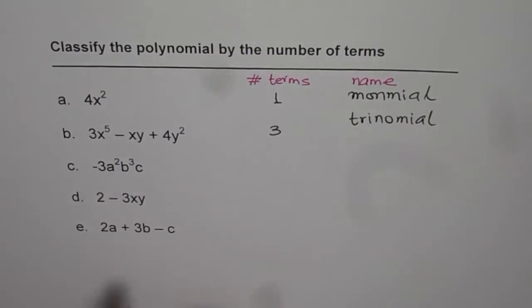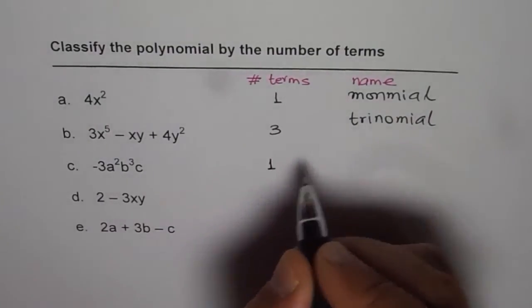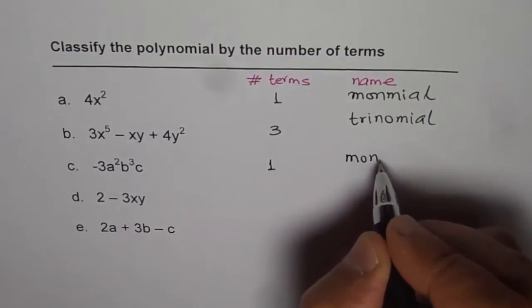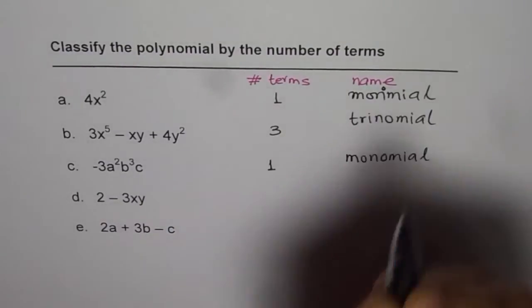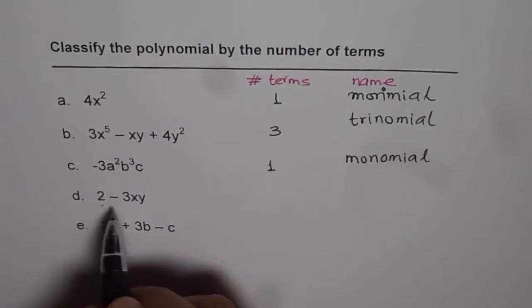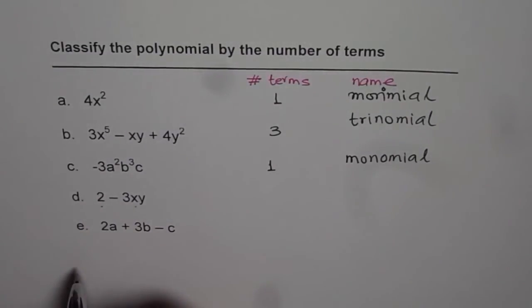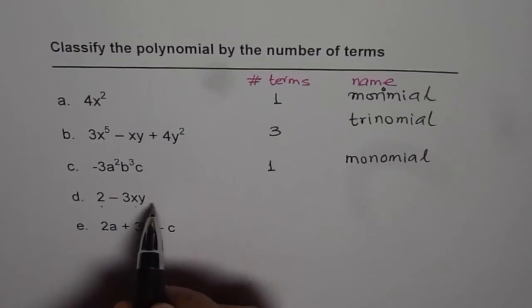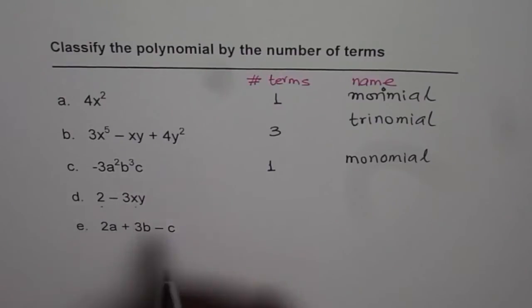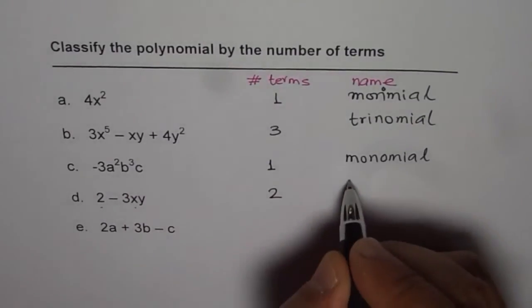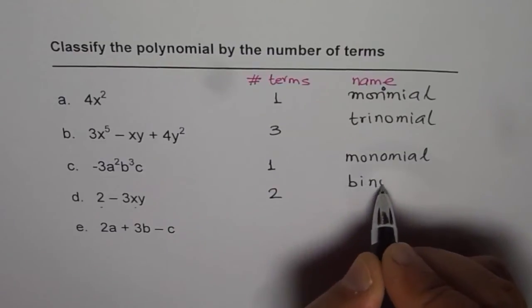Here, how many terms are there? It is just 1 term. So again, the name is monomial. And then this will be considered as two different terms. So these operations, addition and subtraction, make different terms. We have 2 minus 3xy, we have two terms here, and that is called binomial.